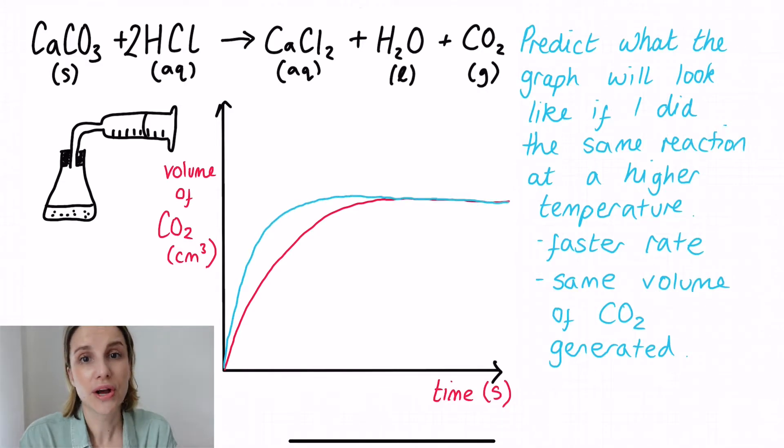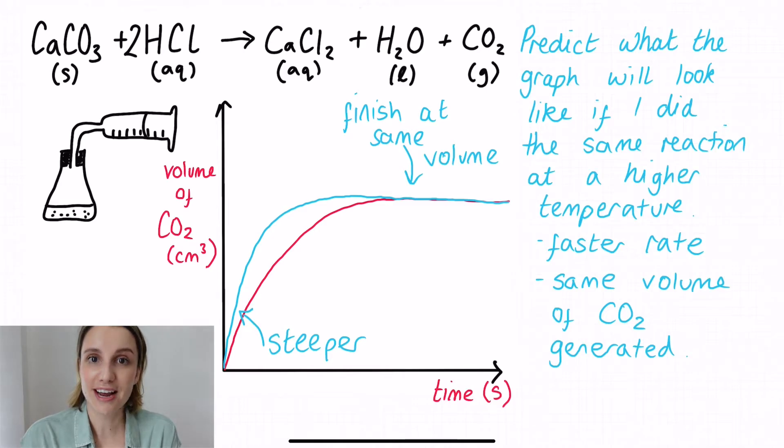We also know that we're not changing the mass or the moles of any of the reactants. The calcium carbonate and the hydrochloric acid are staying the same. The temperature is the only thing that's changing. So if the calcium carbonate and the hydrochloric acid stay the same, that means that the total volume of carbon dioxide is also staying the same. So steeper, but finishes at the same point.